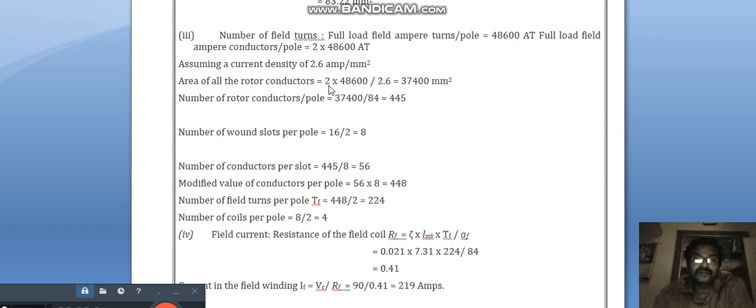Area of rotor conductor is equal to 2 into 48,600 divided by 2.6, we will get 37,419 square millimeter. Number of rotor conductors per volt is equal to 37,400 divided by 84, 445. Number of wound slots per phase volt is equal to 16 / 2 is equal to 8. Number of conductors per slot is equal to 445 / 8. That value would be 56.